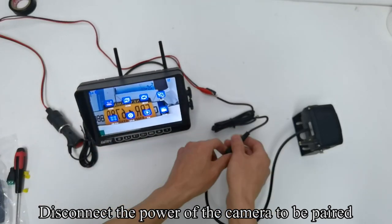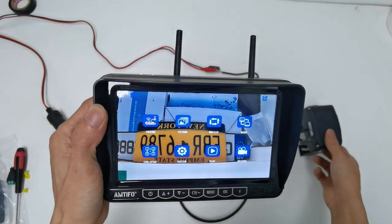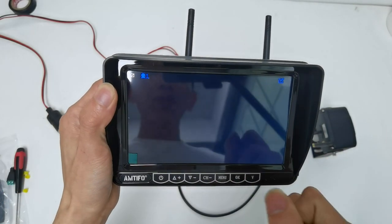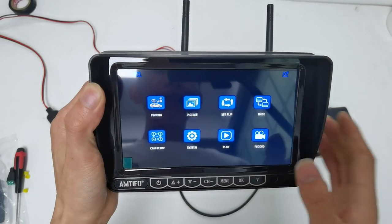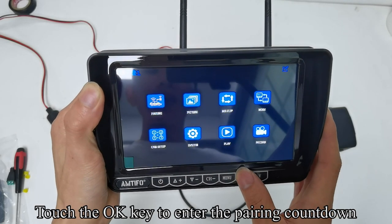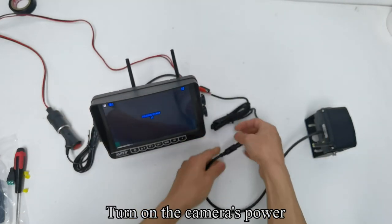Disconnect the power of the camera to be paired. Touch the M key to enter the menu mode. Touch the OK key to enter the pairing countdown. Turn on the camera's power.